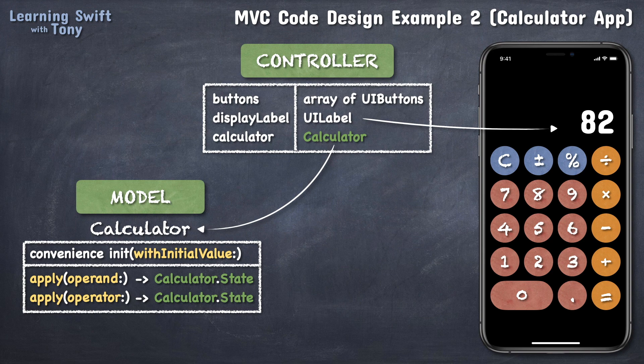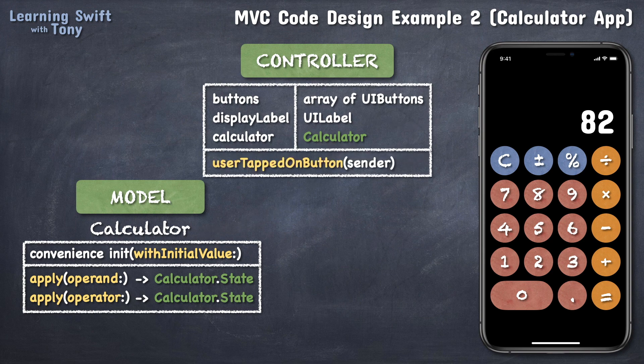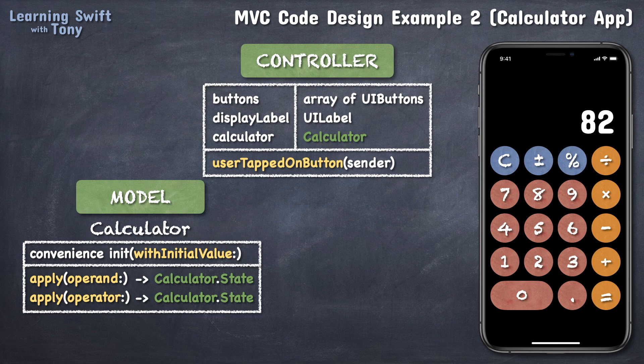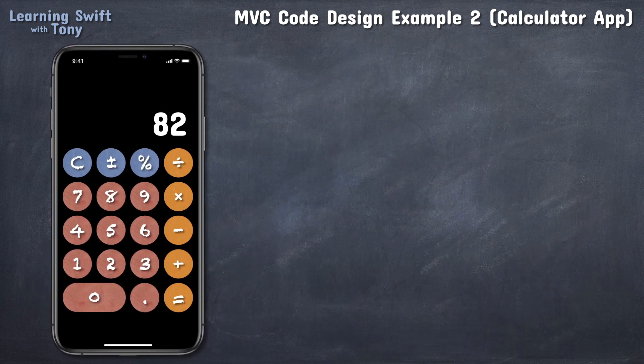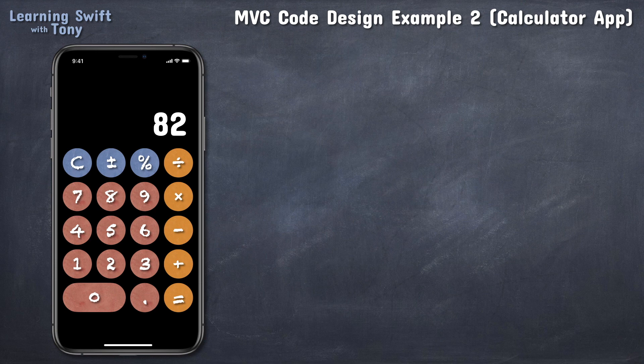One last thing needed for our controller will be a target action registration, basically a function that will be called every time the user taps on one of those buttons. And voila! We are done with our entire code design. That's it! Let's go through a few use cases in slow motion to see how it will work in practice and decide if we need to revise this code design in any way.